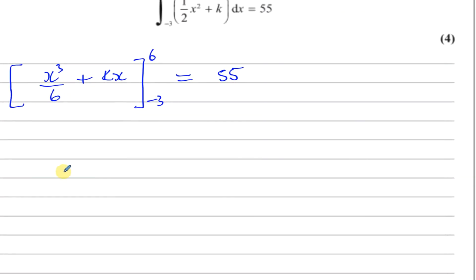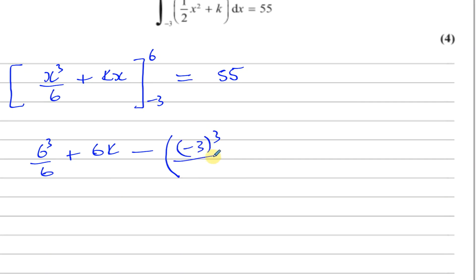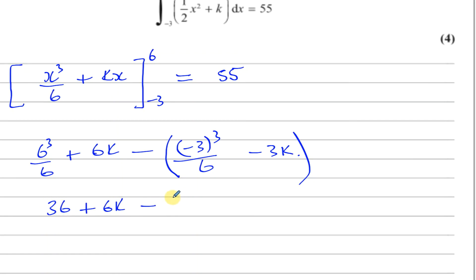Substituting x equals 6: 6 cubed over 6 plus 6k. Then substituting x equals minus 3 in brackets: minus 3 cubed over 6 plus minus 3k. This gives 36 plus 6k minus the bracket containing negative 27 over 6 minus 3k, all equal to 55.